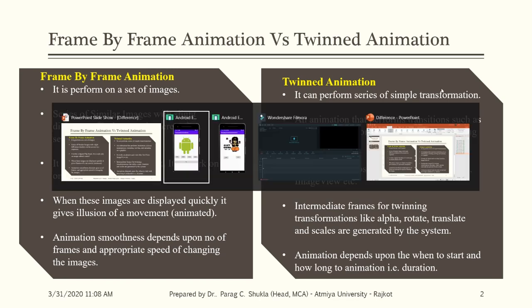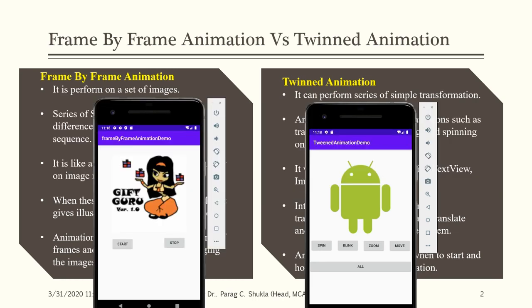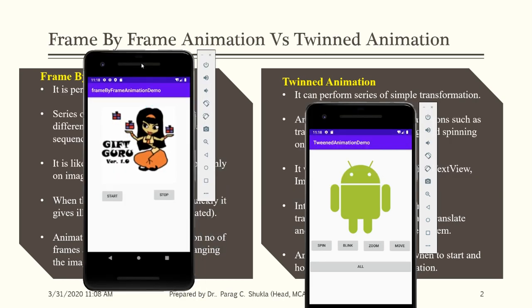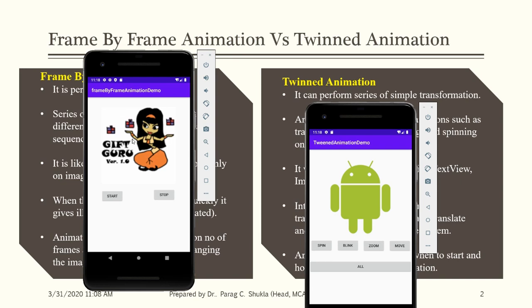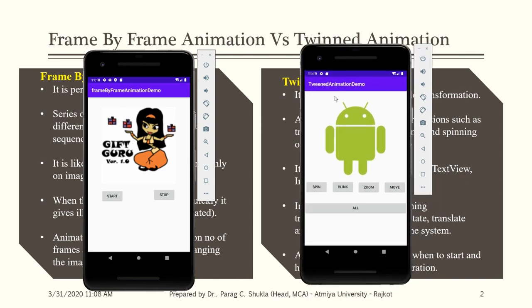Let me show you the difference practically. In frame-by-frame animation, I have three similar images with slight differences. When you click the start button, the three images rotate frequently, and you can stop it anytime. This movement looks like a small film or movie — that is frame-by-frame animation.